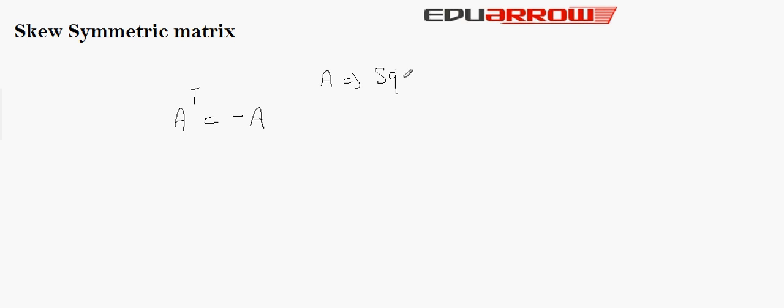Now we will see what is a skew symmetric matrix. A square matrix A is called a skew symmetric matrix if the transpose of A is equal to the negation of A, that is, A-transpose equals negative A. Here A should be a square matrix.